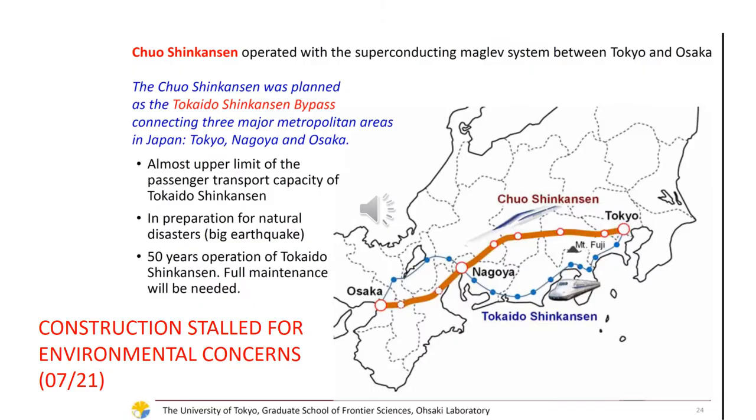This slide shows the line under construction between Tokyo, Nagoya and Osaka. Unfortunately, the construction is stalled for environmental reasons.